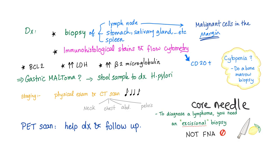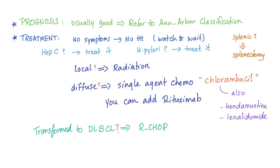The prognosis of marginal zone B-cell lymphoma is relatively good because it is an indolent, low-grade lymphoma. Refer to the Ann Arbor classification discussed previously to assess prognosis — the higher the stage, the worse the prognosis. For treatment: if there are no symptoms, no treatment is needed, since it is an indolent lymphoma.